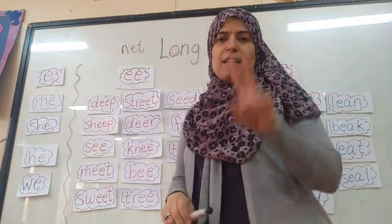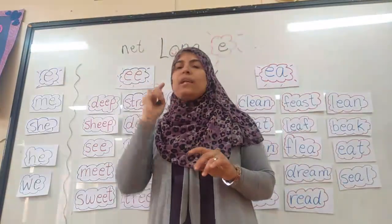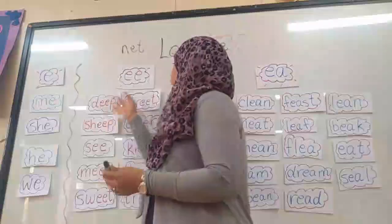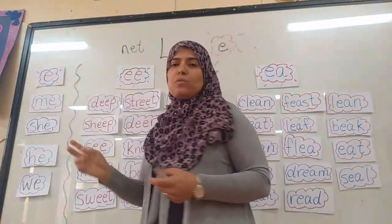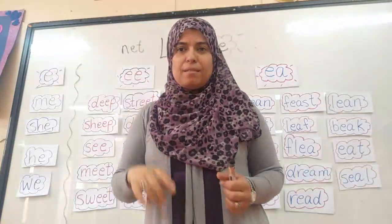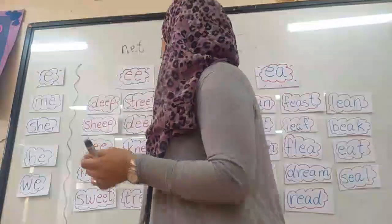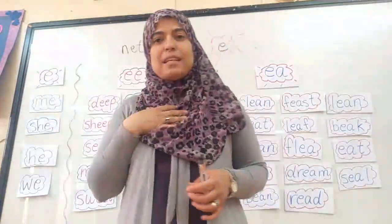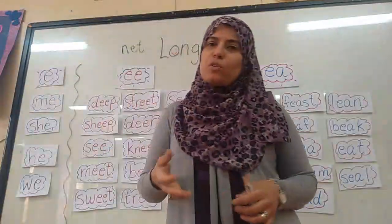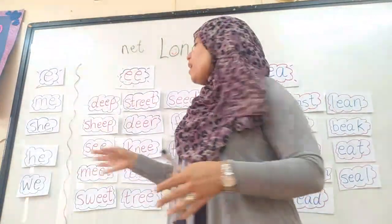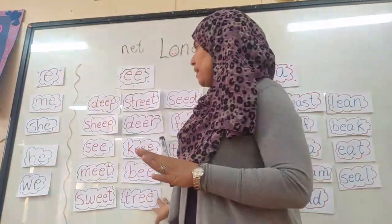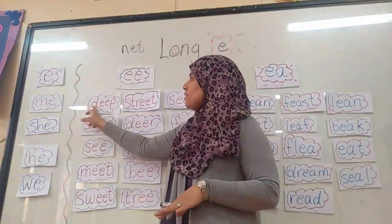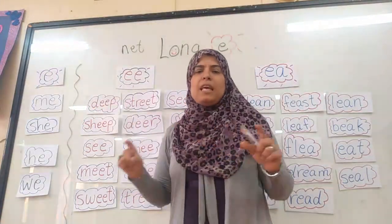Now I have the double E. Double means two letters — they come together and I say their sound: E. Like what? I have many words. If you were in the class grade one, you would tell me the words and I'd write them. But since you're not in class and I don't want the video to be long, I already have all the words on the board. The first word is D-E-P: deep.